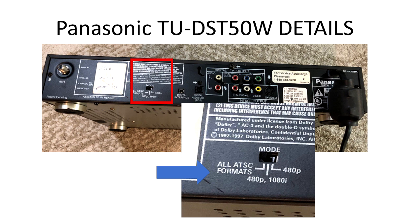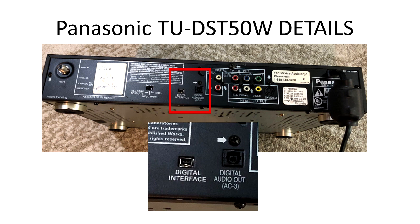Quite a few high definition televisions of this era had a max resolution of 720p, so you were kind of out of luck if you had one of those televisions. Most of the content would be down-converted to 480p, and though it may still look better than what you were used to in 1999, it was not the high-def content you were paying for.